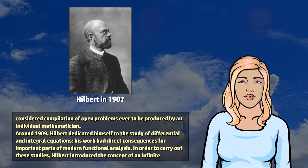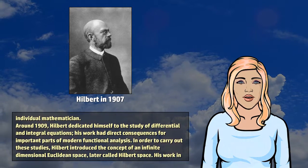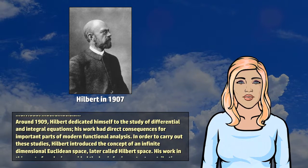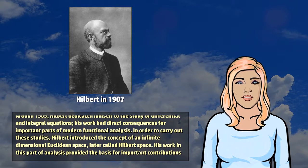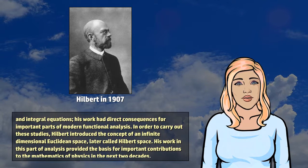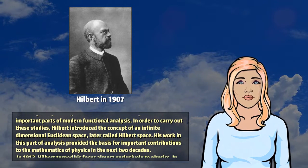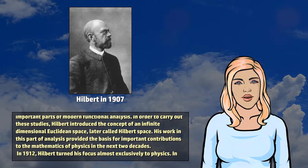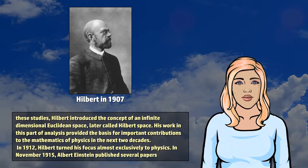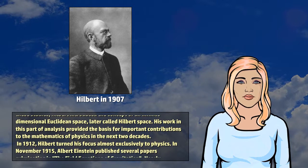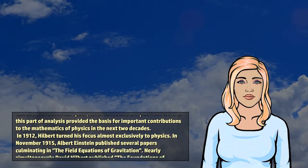Around 1909, Hilbert dedicated himself to the study of differential and integral equations. His work had direct consequences for important parts of modern functional analysis. In order to carry out these studies, Hilbert introduced the concept of an infinite-dimensional Euclidean space, later called Hilbert space. His work in this part of analysis provided the basis for important contributions to the mathematics of physics in the next two decades.